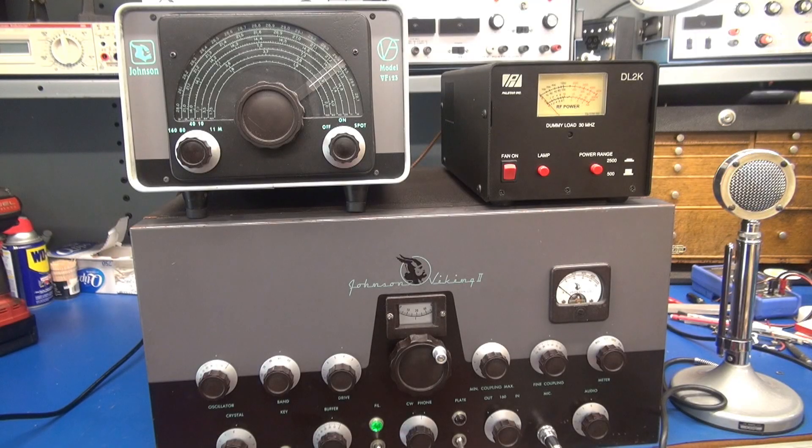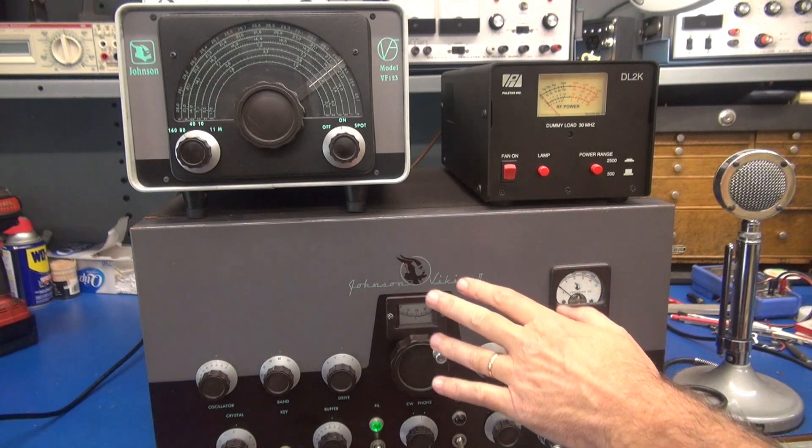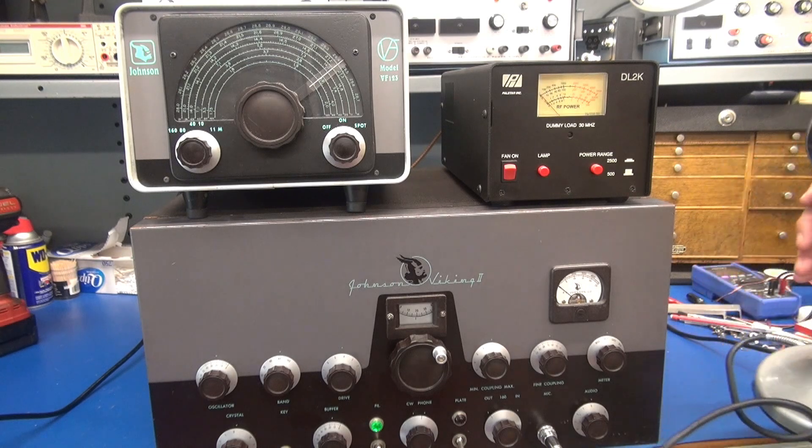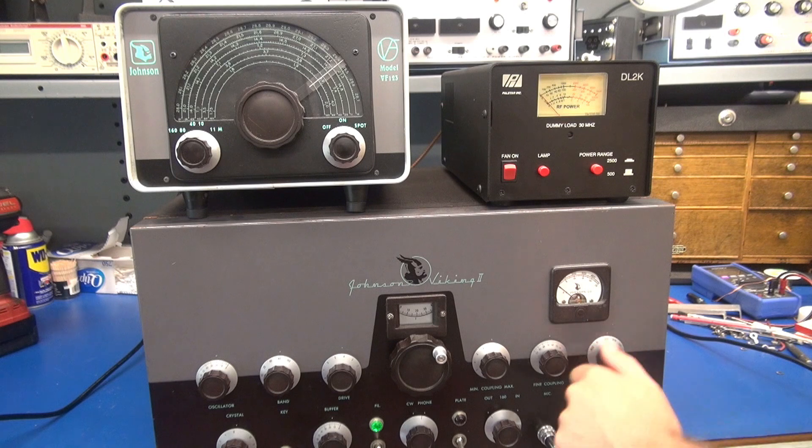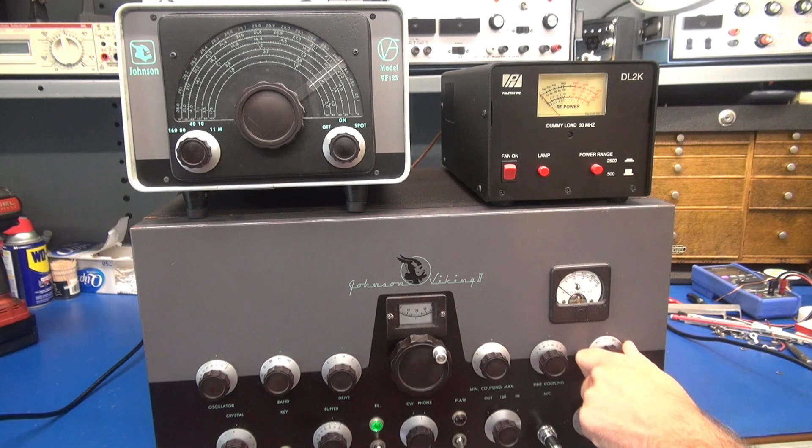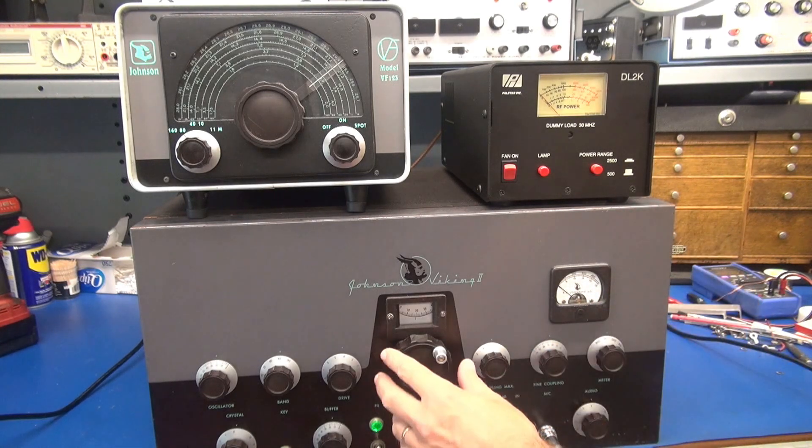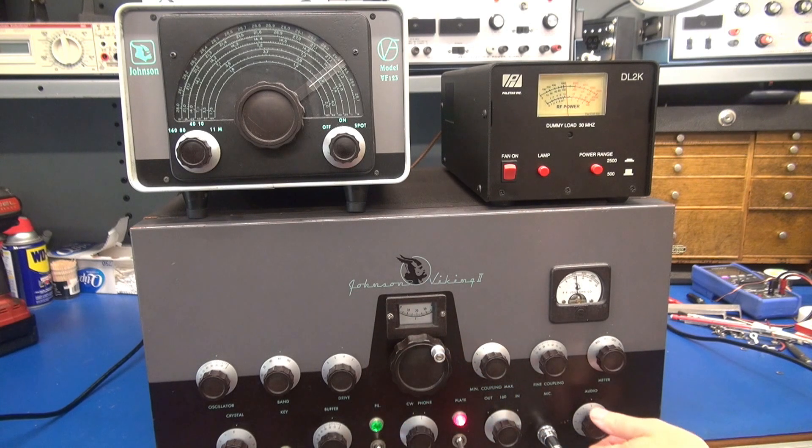Here we go, checkout time. I'm using the D-Lab VFO 123 Palstar dummy load. And the Viking 2 is hooked up with the D-104 so we can watch it modulate. Here's my grid. Go to plate, key it up, make sure we're dipped, look for output.